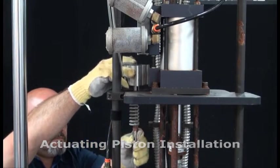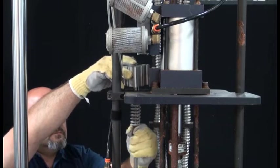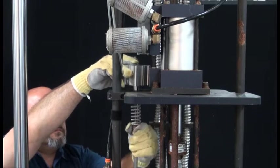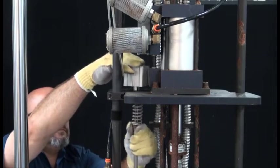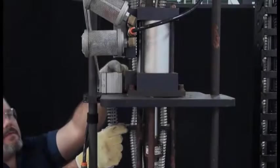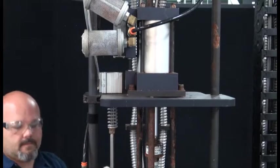Thread the actuating piston to the top of the purge stem until the threads bottom in the actuating piston. There should be about a 1 1/8 inch gap between the piston face and the mounting plate. If not, back off the actuating piston to provide this gap.